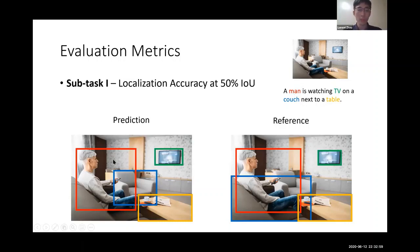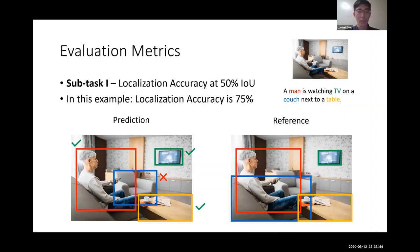So if we compare the prediction to the reference, the red box has over 50% IOU with the reference red box. So that's a correct prediction. And moving on to the second box, the green box, which corresponds to TV and overlaps over 50% IOU with the ground truth TV box. So that's also a correct prediction. And for the third bounding box, the blue one, actually, the prediction locates the wrong couch. And the overlap between the prediction and the reference is lower than 50%, so that's an incorrect box. And finally, for the table is a correct prediction. So in this case, the localization accuracy is three divided by four, which equals 75%.